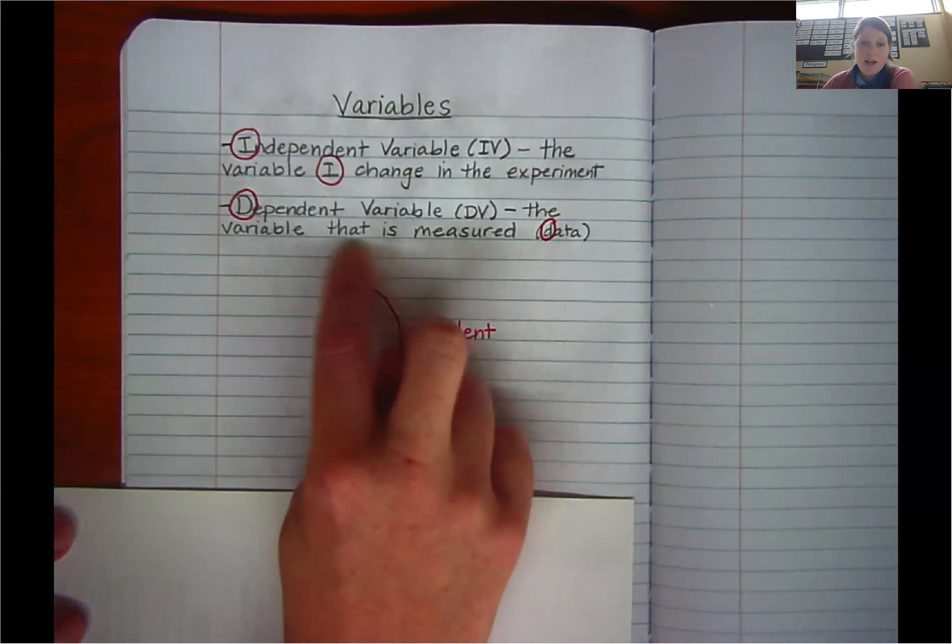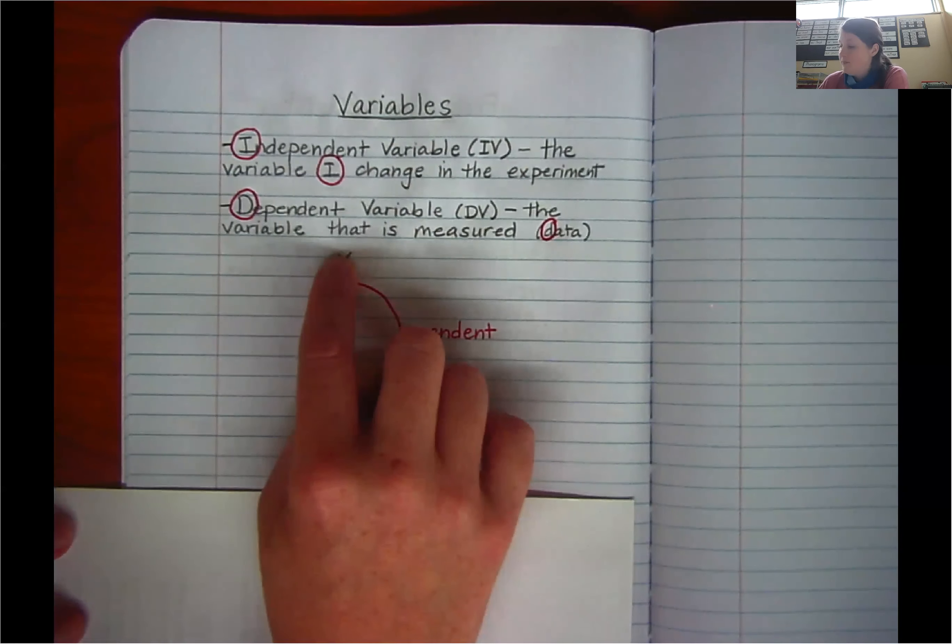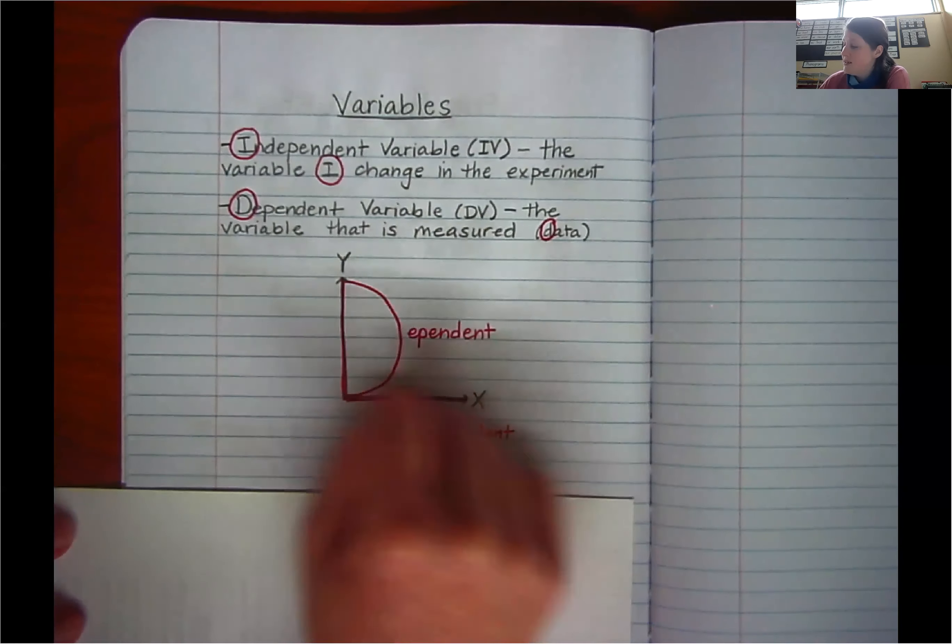So you'll see here I've got my x and my y. I usually remember y goes in the sky. So if I were drawing a picture, y is up, x marks the spot.